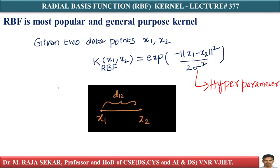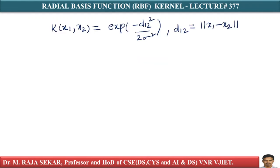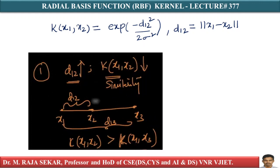Let me rewrite the formula: K(x1, x2) = exp of minus d12 squared divided by 2 sigma squared, where d12 is the norm of x1 minus x2 — the distance between two points x1 and x2. As distance increases, the kernel value K(x1, x2) decreases. This point is important.